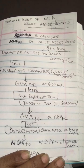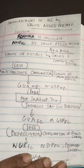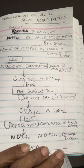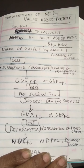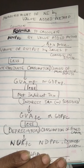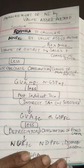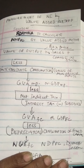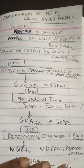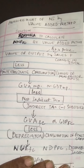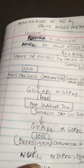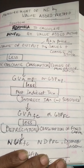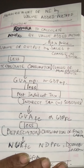From value of output, to avoid double counting, we minus intermediate consumption. What we get is the aggregate known as Gross Domestic Product at market price, or Gross Value Added at market price. From there, if you want to go to factor cost, you minus net indirect taxes — that is indirect taxes minus subsidies.